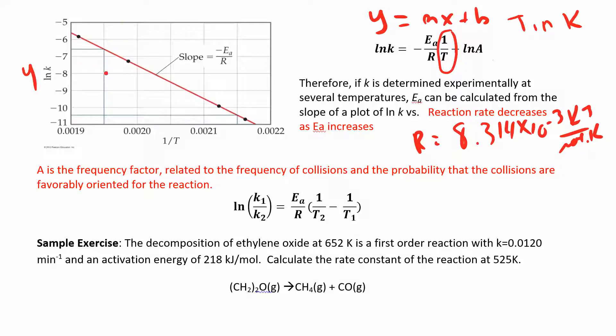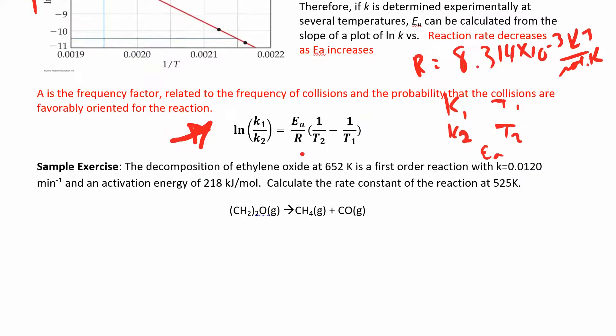If you only have two points, you can use this equation. If you have two rate constants at two different temperatures, you can figure out what the activation energy is. Your variables here are K1 and K2, and T1 and T2, and then you also have your activation energy. If you're given four out of five of these things, you can find the other one. We basically just took this equation and evaluated it just for two points.